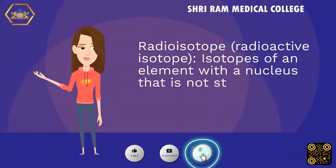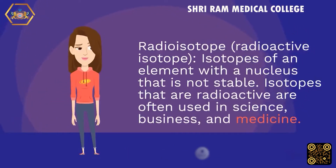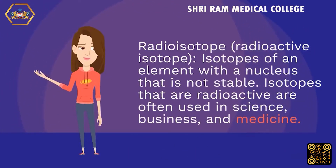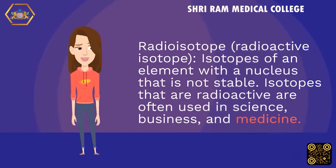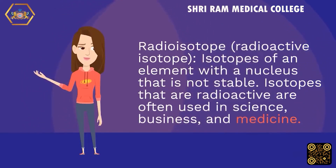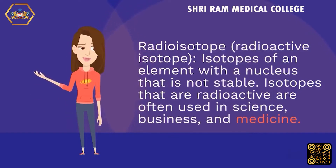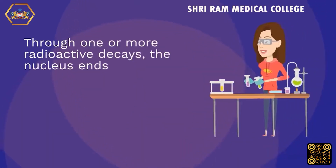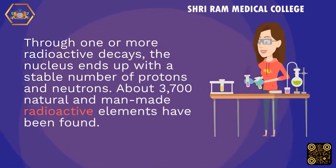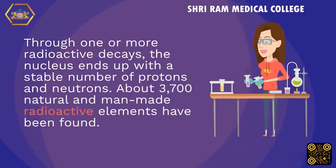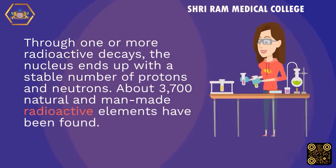Radio-isotope / radioactive isotope: isotopes of an element with a nucleus that is not stable. Isotopes that are radioactive are often used in science, business, and medicine. Through one or more radioactive decays, the nucleus ends up with a stable number of protons and neutrons. About 3,700 natural and man-made radioactive elements have been found.